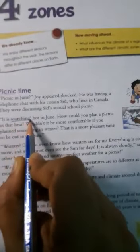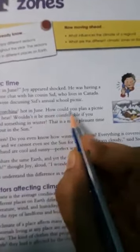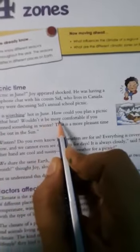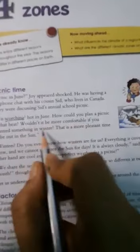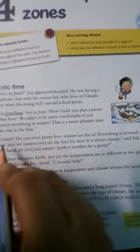It is scorching. S-C-O-R-C-H-I-N-G. Scorching means very hot. Scorching hot in June. How could you plan a picnic in that heat? Wouldn't it be more comfortable if you planned something in winter that is a more pleasant time to be out in the sun?